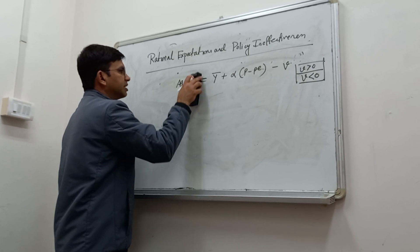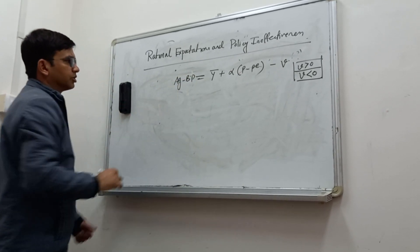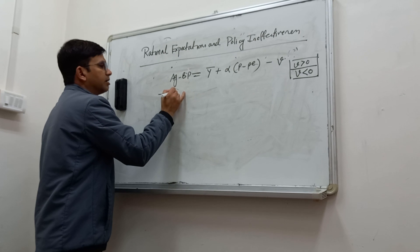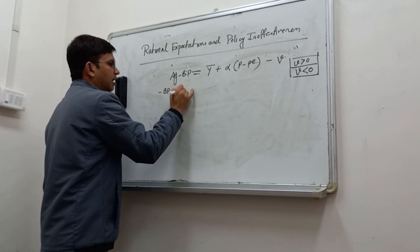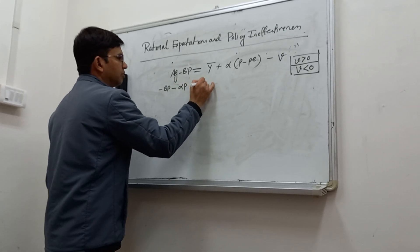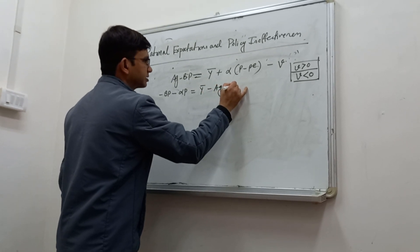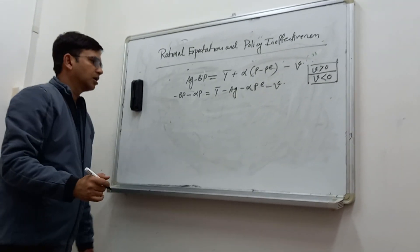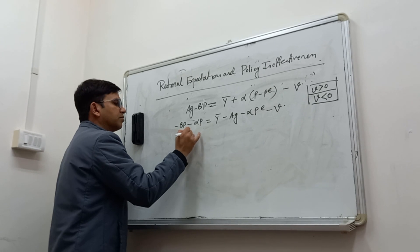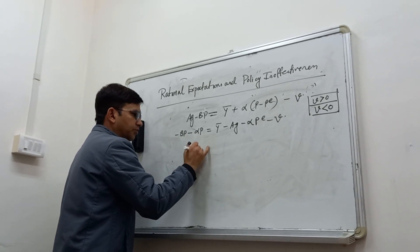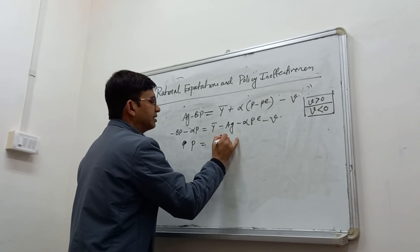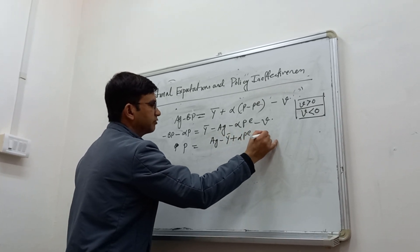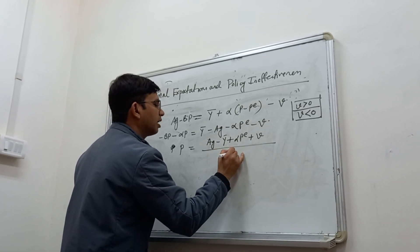From the demand side, we have AG − BP. Rearranging: −BP − αP = Ȳ − AG − αPE − V. Finally, solving for P: P = (AG − Ȳ + αPE + V) / (α + B).